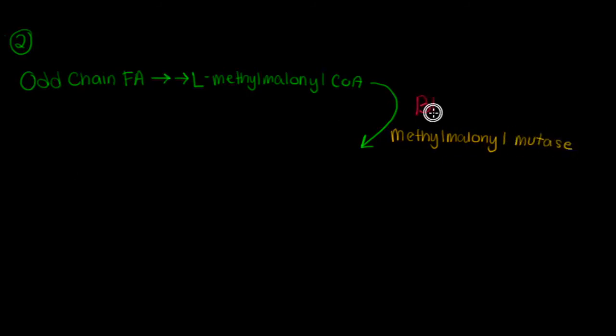Our second function of B12 that we're going to look at today is the cofactoring of the methylmalonyl mutase reaction to form succinyl-CoA. We start with our odd-chain fatty acids, which are carboxylated to the L-methylmalonyl-CoA. Adding in B12 and our methylmalonyl mutase enzyme are then used to create succinyl-CoA, which can be used in the citric acid cycle to eventually create ATP.